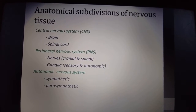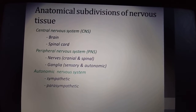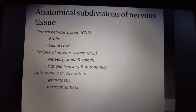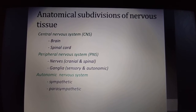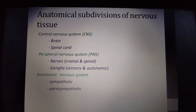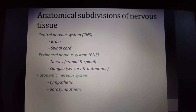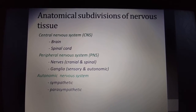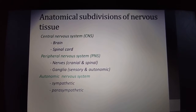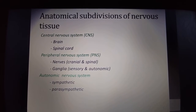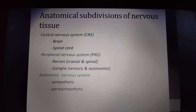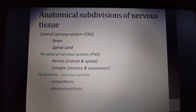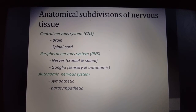The autonomic nervous system is divided into sympathetic and parasympathetic, that is the secretomotor pathway and vasomotor. To summarize, the central nervous system consists of the brain and spinal cord, the peripheral nervous system includes cranial and spinal nerves and sensory and autonomic ganglia, and the autonomic nervous system includes the sympathetic and parasympathetic systems.